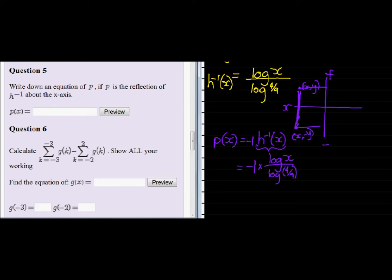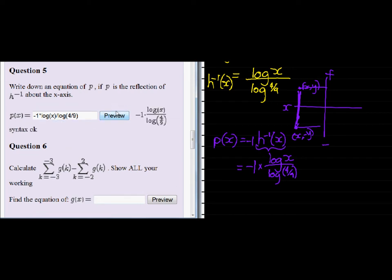There we go, let's put that in. So we have negative 1 times log of x divided by log of 4 over 9. There we go again.